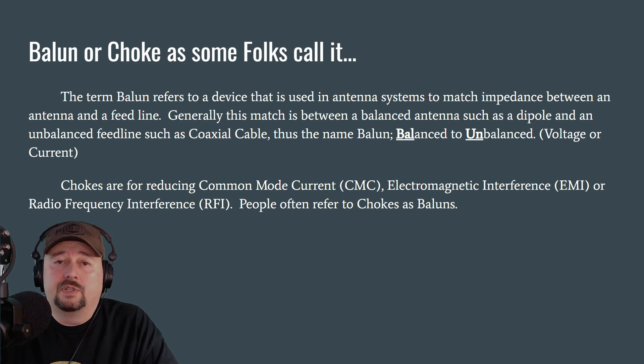A balun can either be a voltage or a current balun. Most people are using current baluns today. They're more popular than voltage baluns that were used in the past. Now, what I refer to as a choke, some people call as a balun. But chokes are for reducing common mode current, or EMI, electromagnetic interference, or radio frequency interference, RFI. As mentioned, people refer to chokes as baluns, baluns as chokes. There's a lot of confusion around that topic. But the reason that you want to use one of these is because your antenna can become susceptible to alternating current coming down on your coaxial cable on the outside of the shield. And we're going to take a look at a picture of that right now.